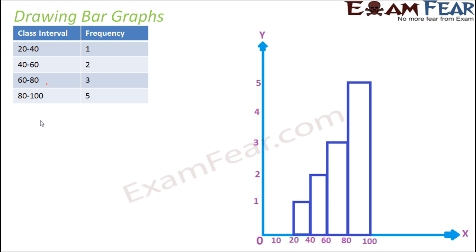Whenever you look at a bar graph, it looks somewhat like this. Bar graphs consist of bars, which are nothing but rectangular pieces. Each of these rectangular pieces is called a bar. The width and height of the bar tell us a lot of information about the grouped frequency distribution table.